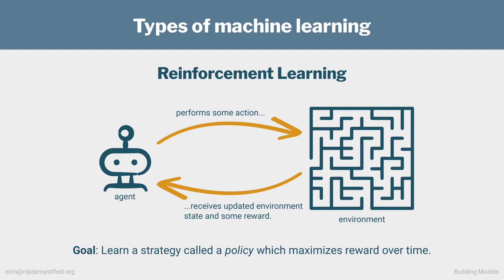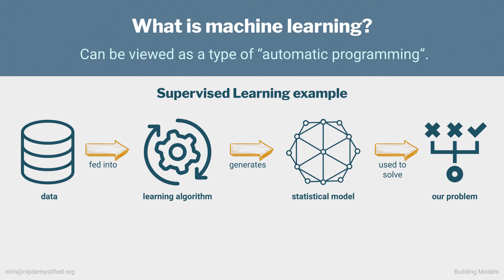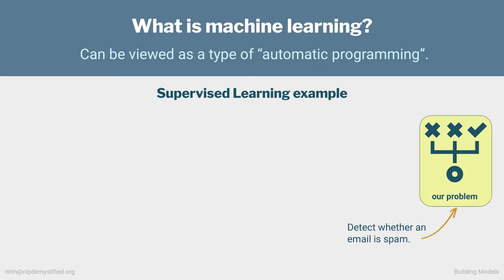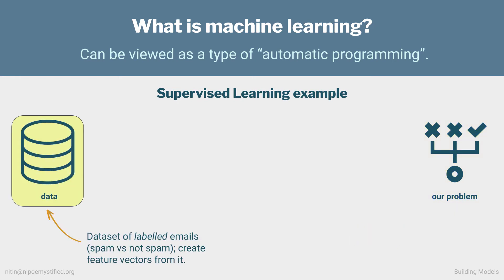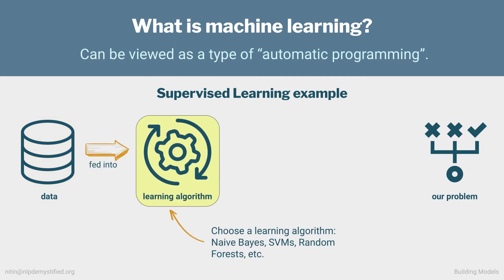Let's go back to what we said about ML as automatic programming and clarify that in the context of supervised learning. Going back to the classic example of spam detection, our practical problem is to detect whether a given email is spam. Our dataset is a collection of historical emails, each tagged with a label specifying whether it's spam. And we create feature vectors from the emails, maybe using the techniques we've discussed so far. We want to take this data and generate a statistical model which can tell us with acceptable probability whether a given email is spam. To do this, we use a learning algorithm, and for a classification task there are plenty to choose from — we'll be covering one of them very soon.